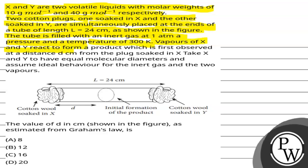Vapours of X and Y react to form a product which is first observed at a distance d cm from the plug soaked in X. Take X and Y to have equal molecular diameters and assume ideal behaviour for the inert gas and the two vapours.